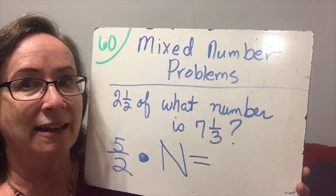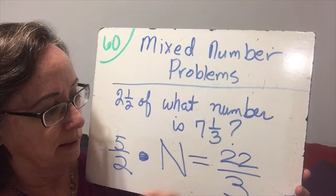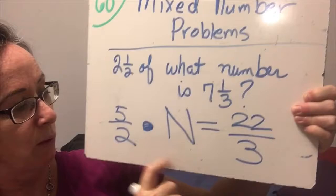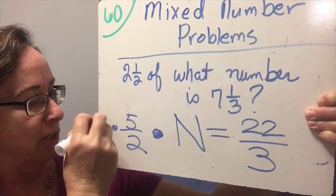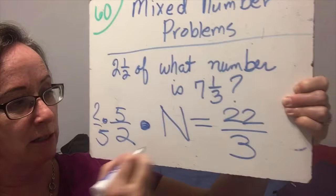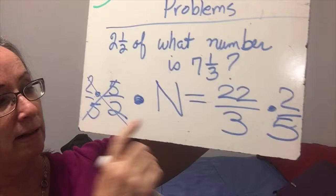Seven and one third is another mixed number, so we turn it into an improper fraction: seven times three is 21, plus one is 22 thirds. Now it doesn't look nearly as complicated. We want to get rid of the five halves to isolate n, so we multiply by the reciprocal of five halves, which is two fifths. If we multiply the left side by two fifths, we must multiply the right side by two fifths also.